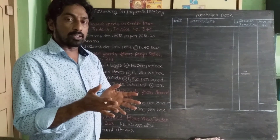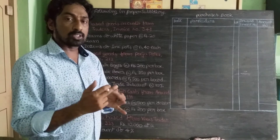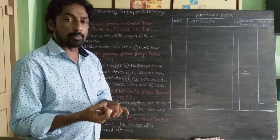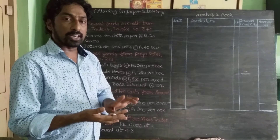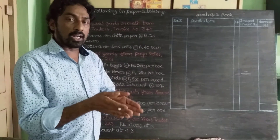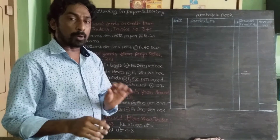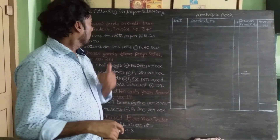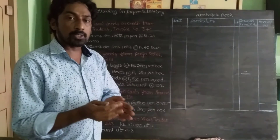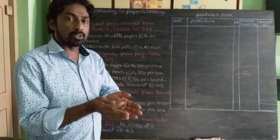There are a total of 8 types of subsidiary books: purchase book, purchase returns, sales book, sales returns, bills payable, bills receivable book, cash book, and general journal. Each transaction needs to be identified as related to which of these 8 books, and that book is then prepared.